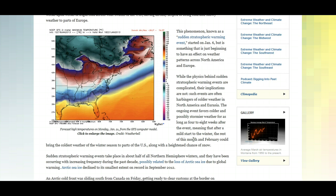So it goes on to say that sudden stratospheric warming events take place in about half of all Northern Hemisphere winters, and they have been occurring with increasing frequency during the past decade, possibly related to the loss of Arctic sea ice due to global warming. Arctic sea ice declined to its smallest extent on record in September 2012.